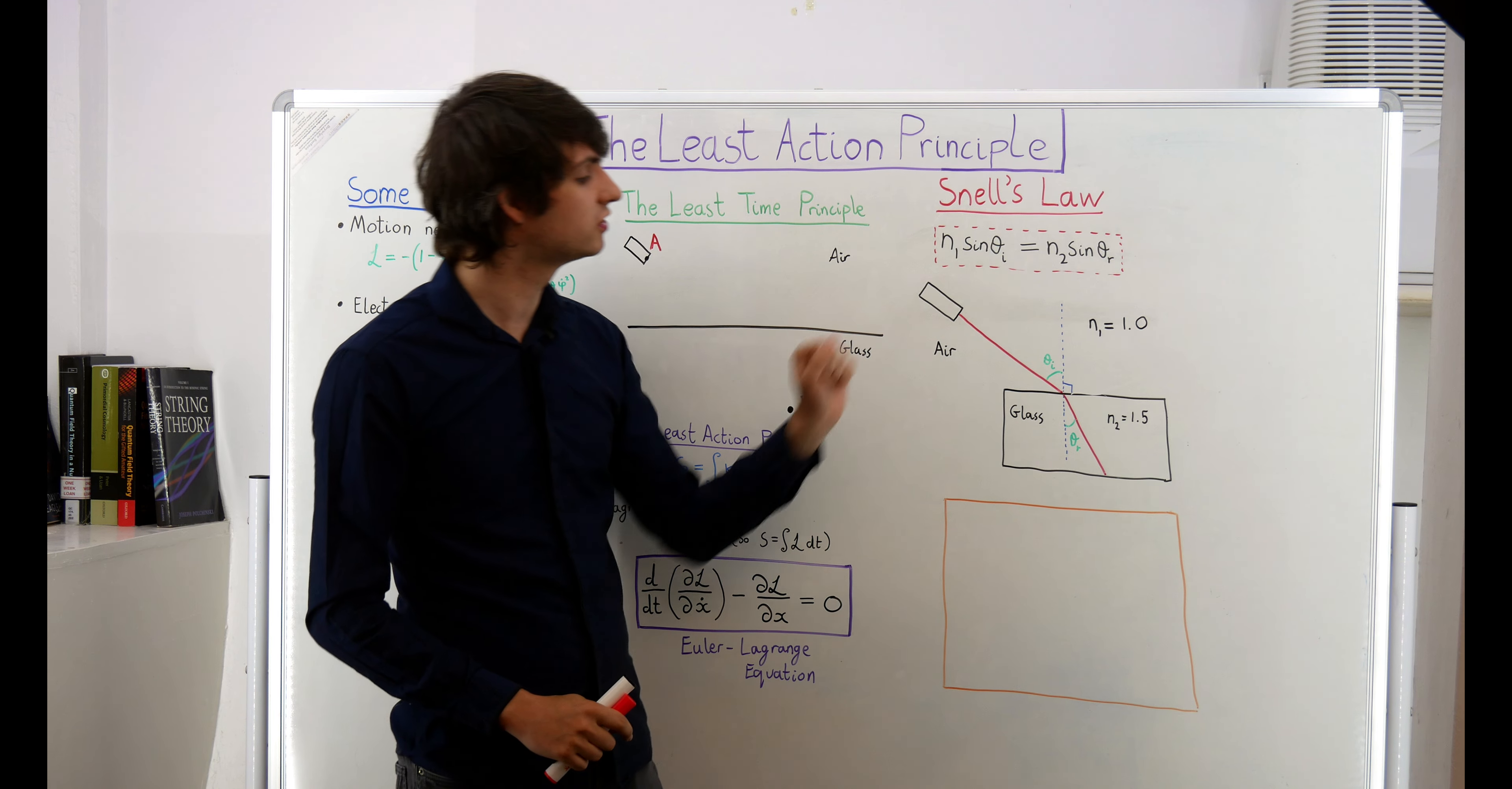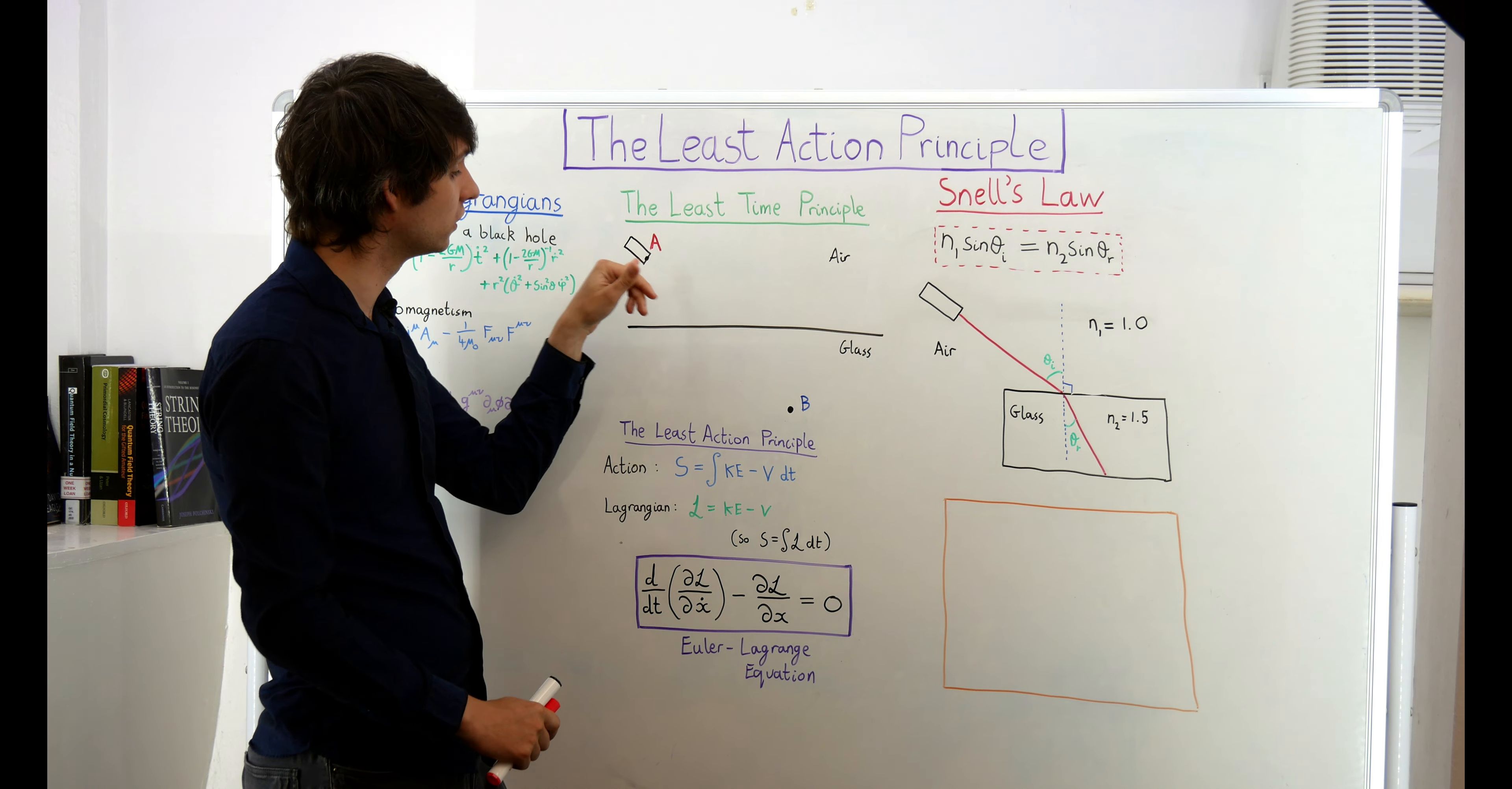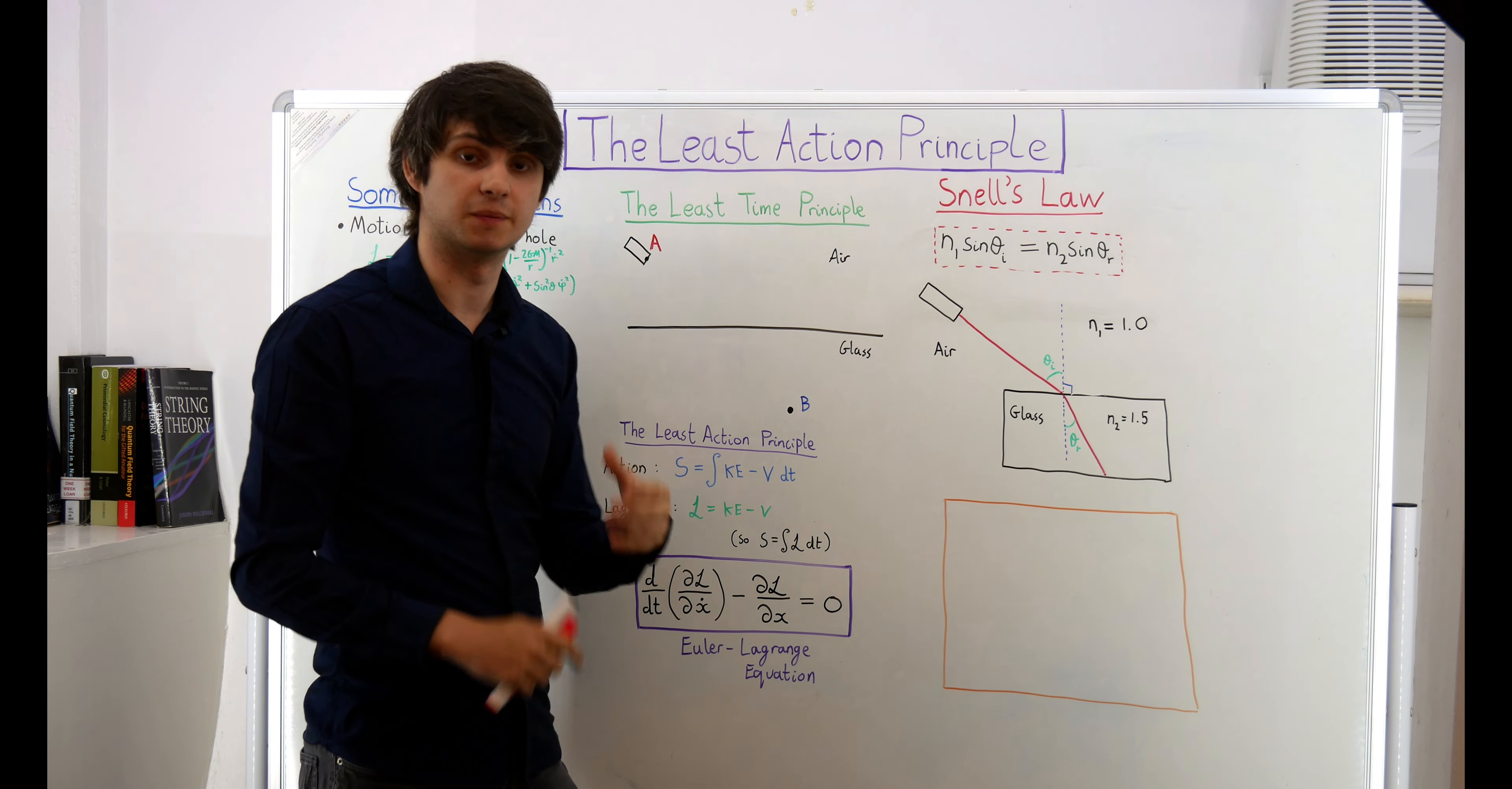Let's suppose that we have a very similar setup to before. We have a light source at the point A, and a boundary between two different media, air and glass. Let's also suppose that we want our light ray to end up traveling through the point B in the glass. Given these fixed start and end points, the only thing that we can actually vary here will be the orientation of the light source, or in other words, which point along the boundary the light ray is going to enter the glass.